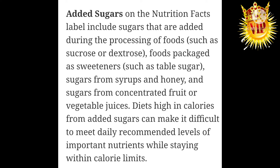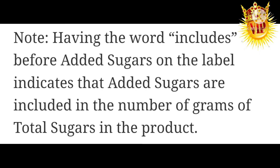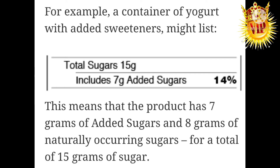Added sugar is important. If we add sugar beyond the calorie limit, we can add sugar to the next meal as well. For example, total sugar is 15 grams and includes 7 grams of added sugar. This means that natural sugar accounts for the remaining amount in the 15 grams.